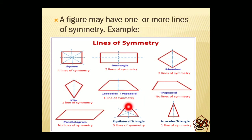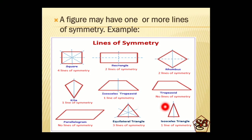Coming to the equilateral triangle — a triangle which has all the sides equal in length — it has three lines of symmetry: vertical, and the other two diagonals. An isosceles triangle, the one which has two equal sides, has only one line of symmetry.